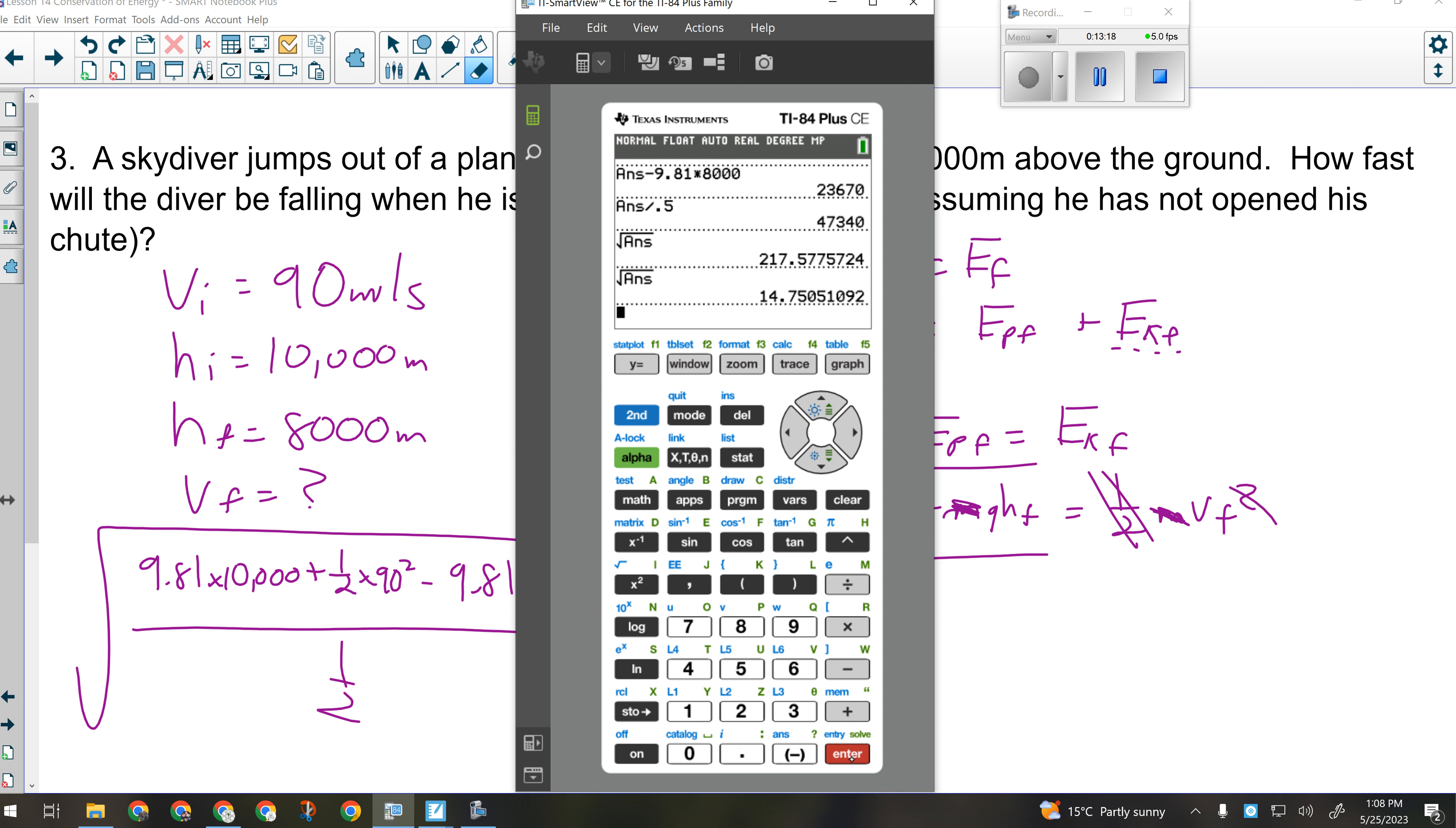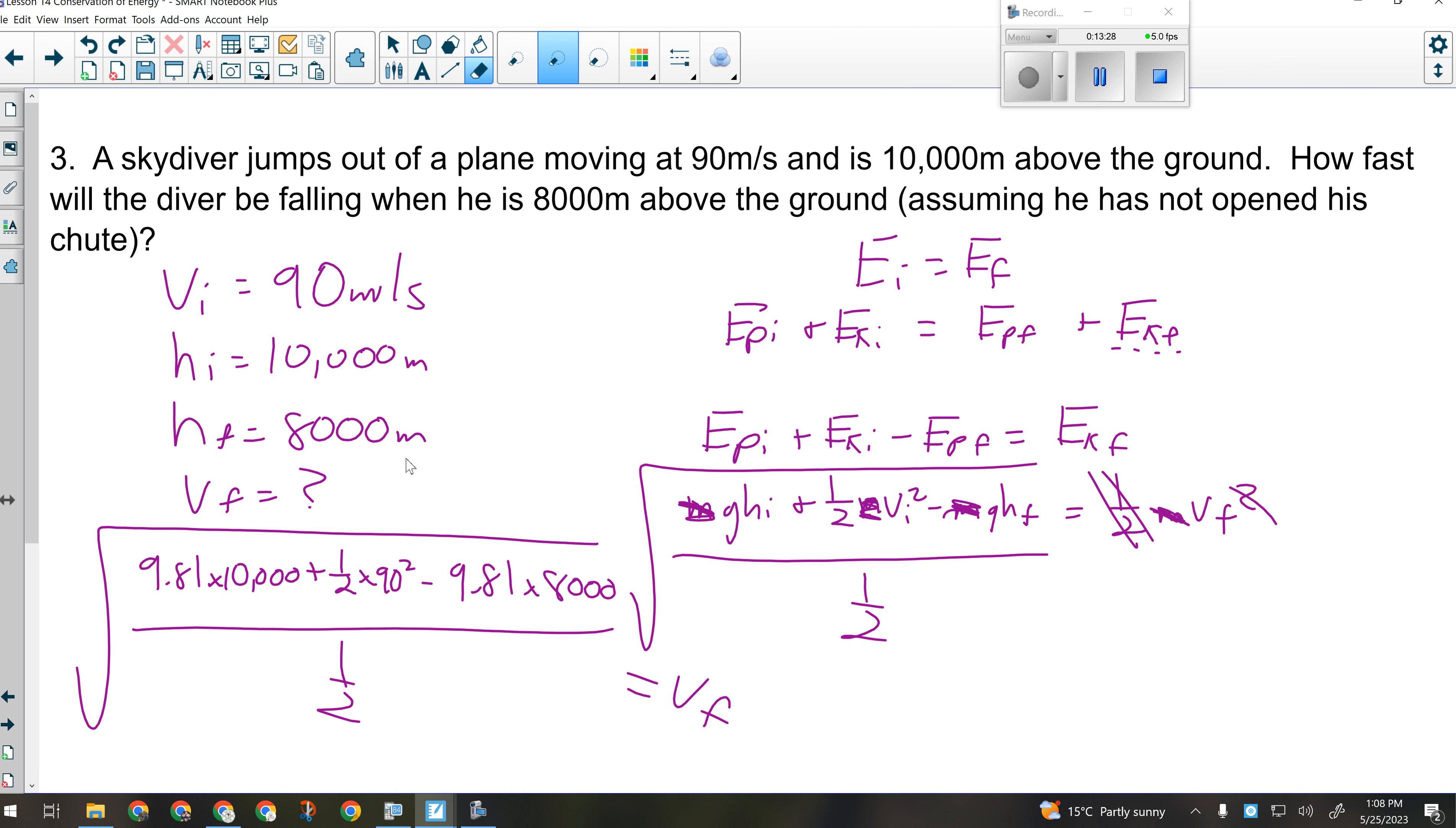Oh, I squared it twice. 217.5. So 218 meters per second would be how fast they are going after falling 2 kilometers. You go pretty fast falling 2 kilometers. It's a long time to fall. You'd have to scream and then inhale and scream some more. Inhale and scream some more. All right. So 218 meters per second. Everybody all right with that?